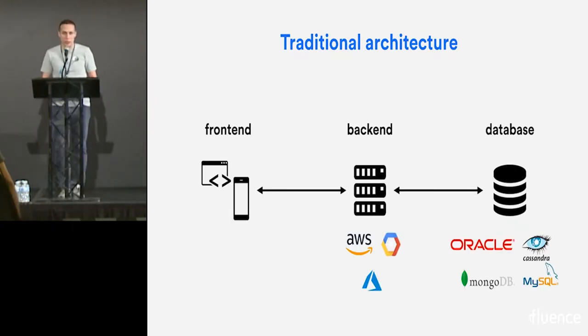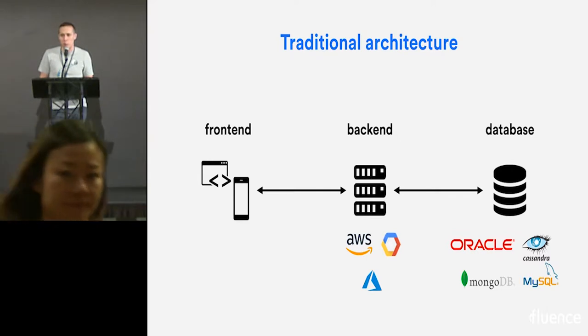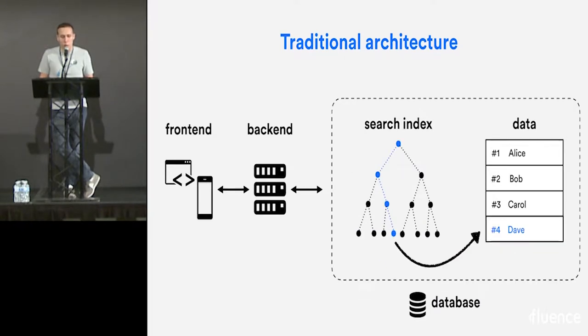If you look at traditional architecture, it usually looks like this. You have some sort of front end - a mobile application or web application - and it queries a backend running in the cloud, Amazon or Google Cloud, and it will query a database there. The backend performs computations, and the database allows you to find the data you need fast using search indexes, which let you find the row you want fast even in a terabyte-scale database.